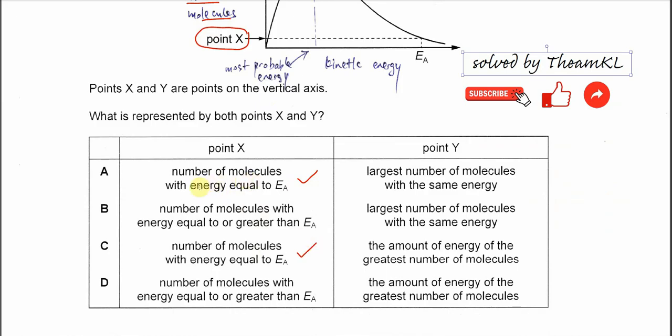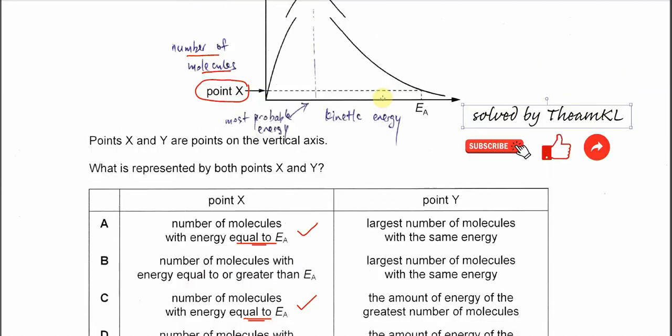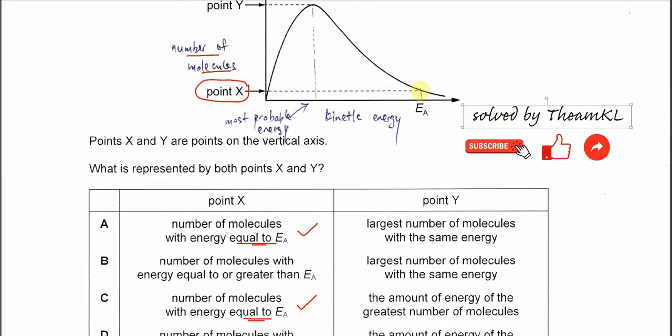Number of molecules with energy equal to Ea, the activation energy. So it's not greater than Ea - it's just at Ea. Because from this point we know that this number of particles or molecules is with this Ea.